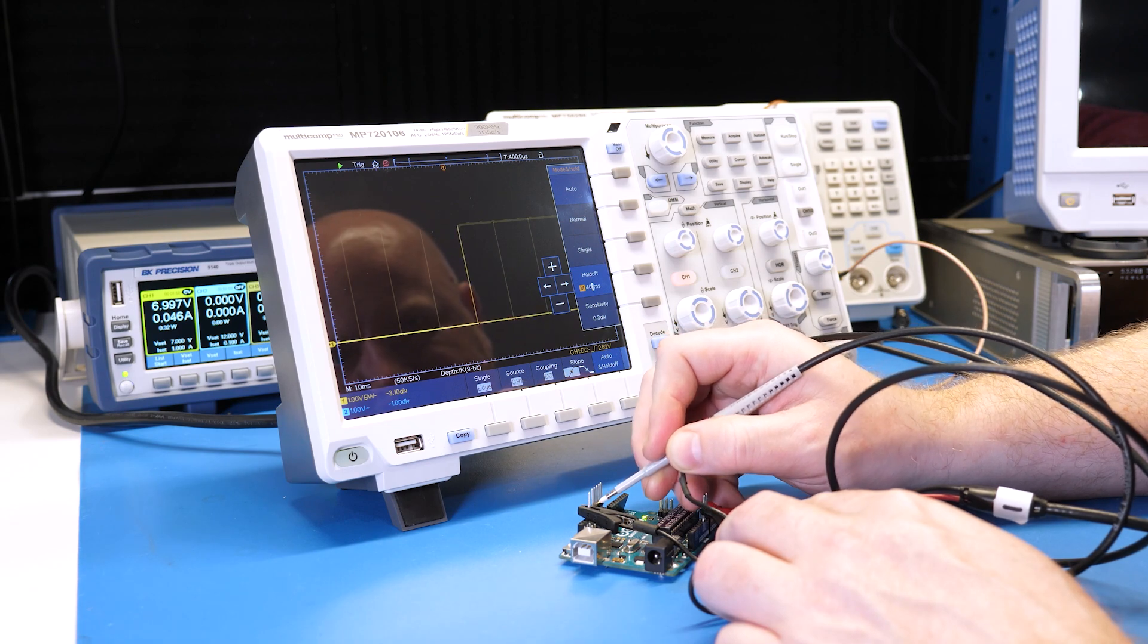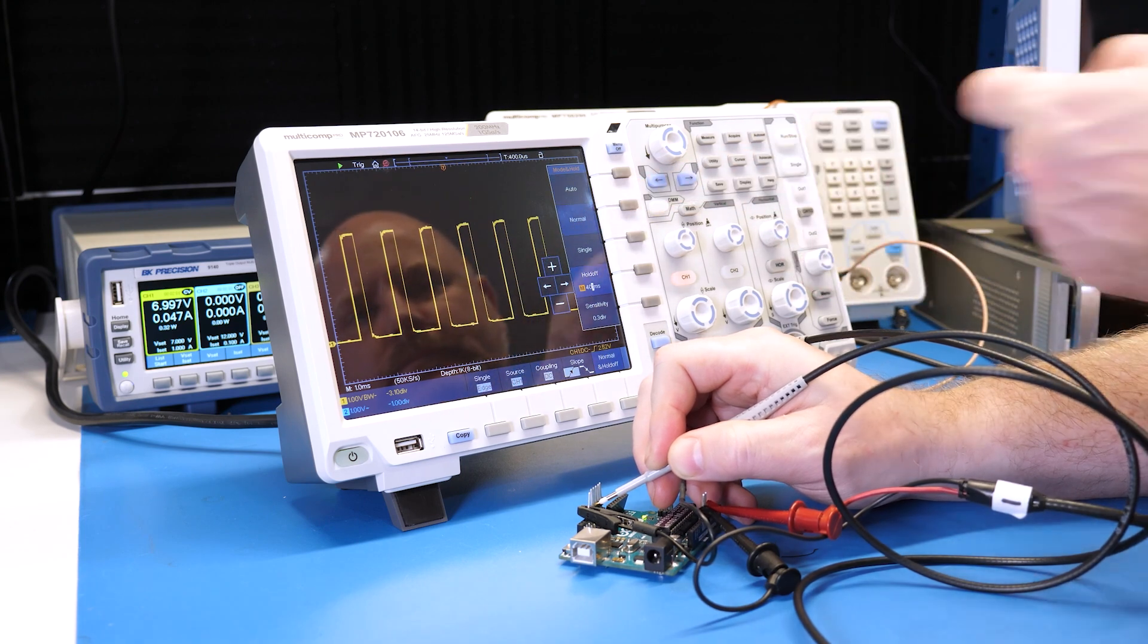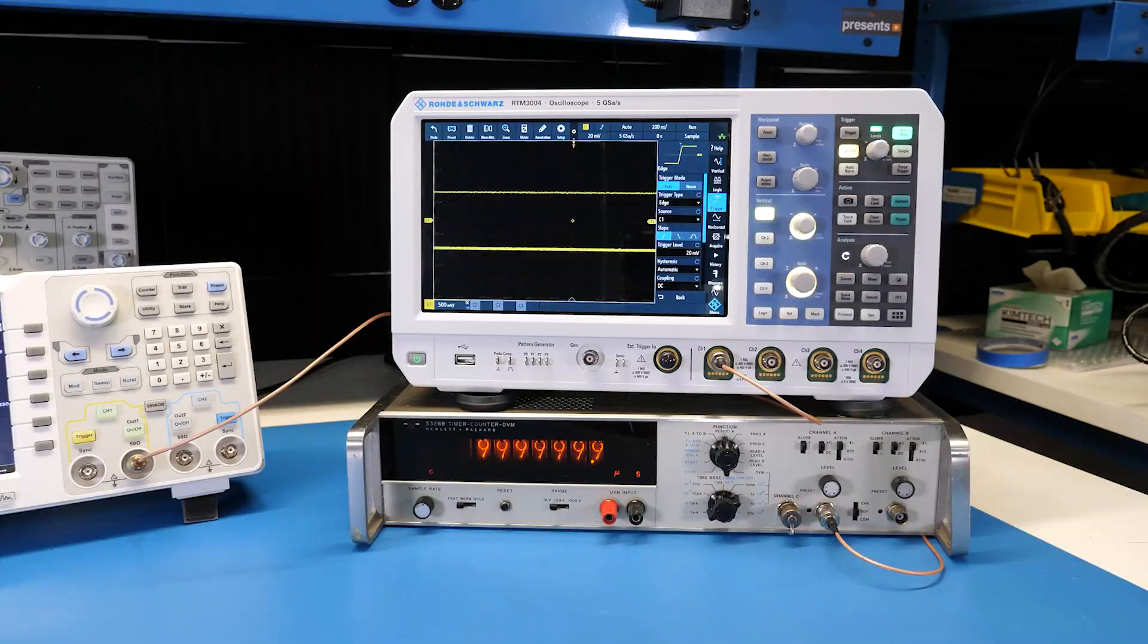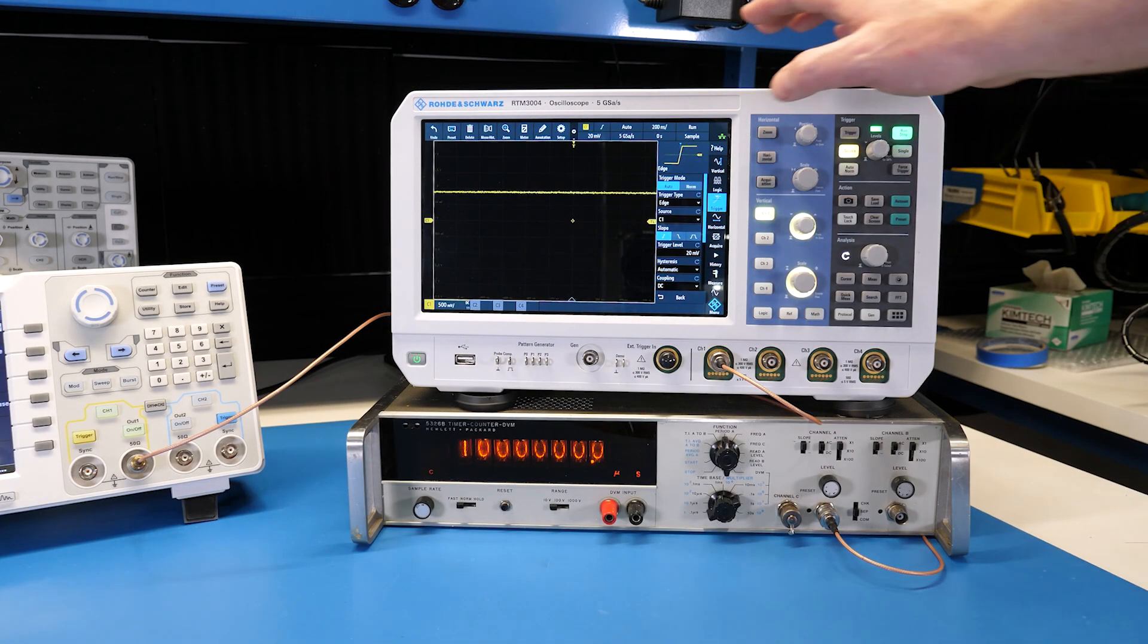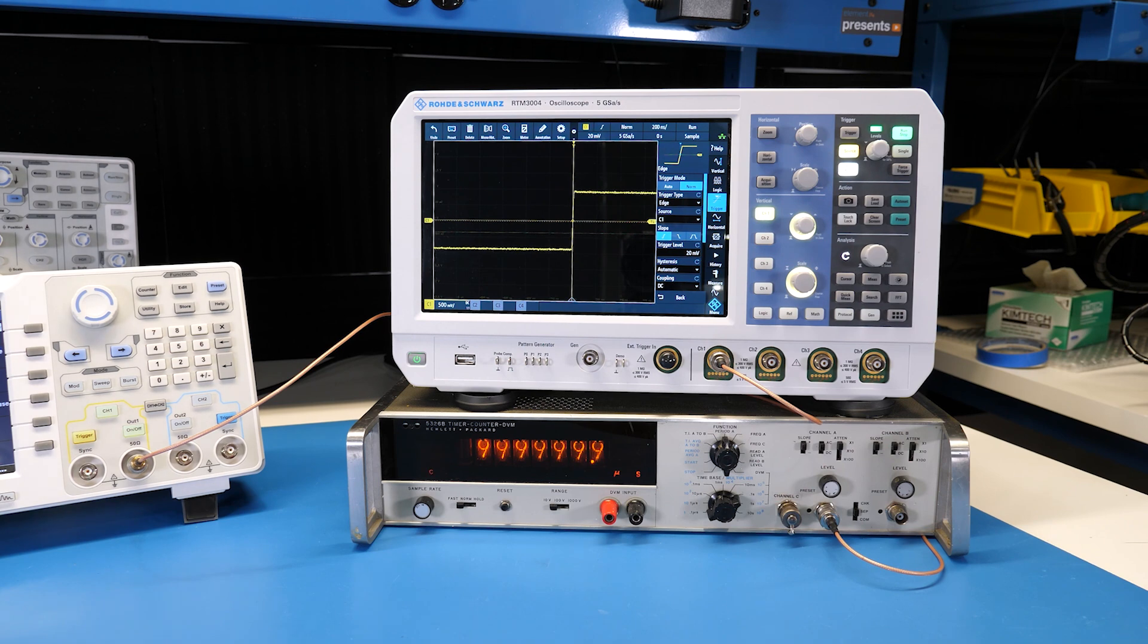Typically, auto is best for debug or when you're not really sure what you're looking for. Normal can help when you want to focus on a specific event. It is handy when hand probing. It's also very helpful for slow signals. In auto, we never see the edge of this one hertz signal. But with normal, we only get information when the signal transitions.